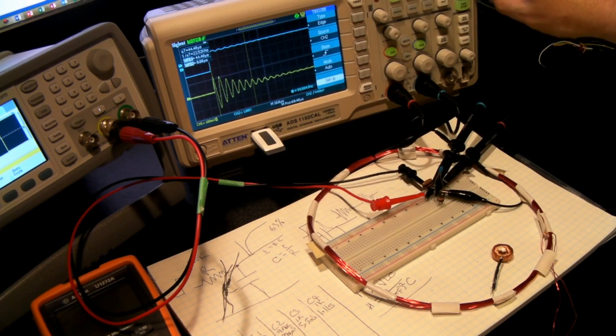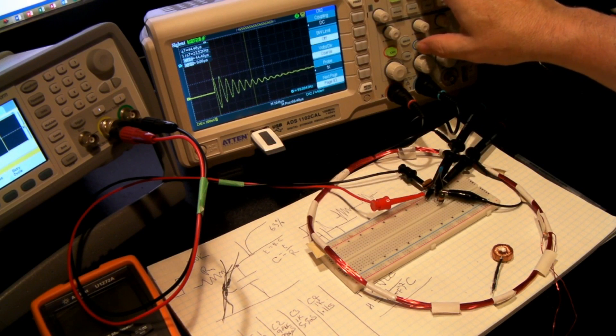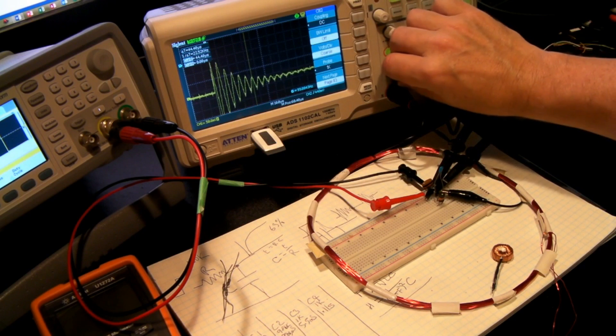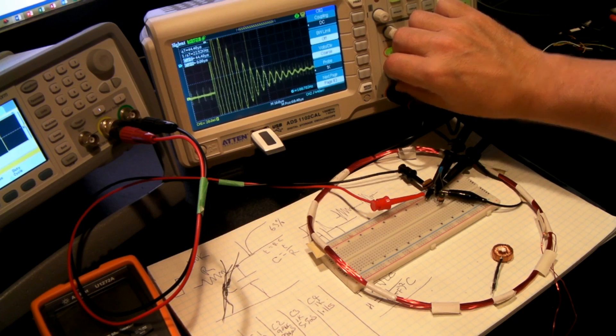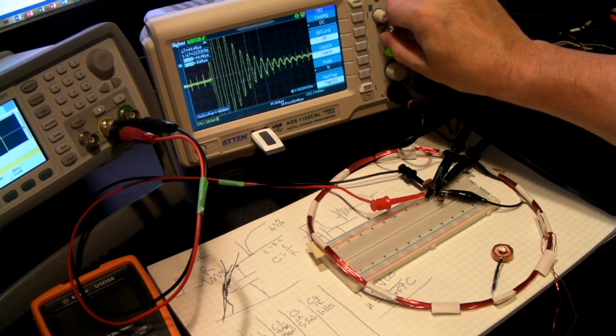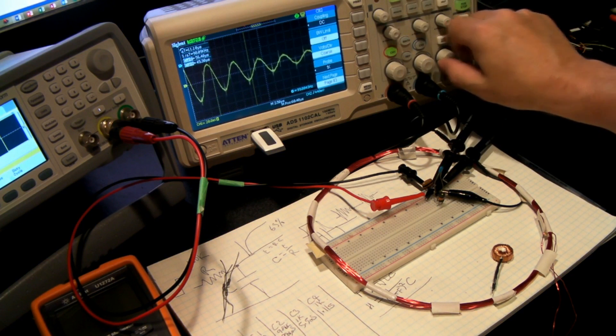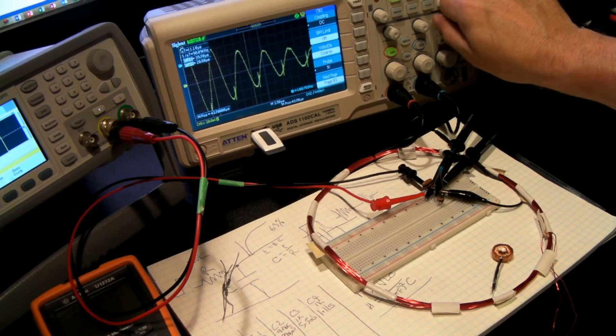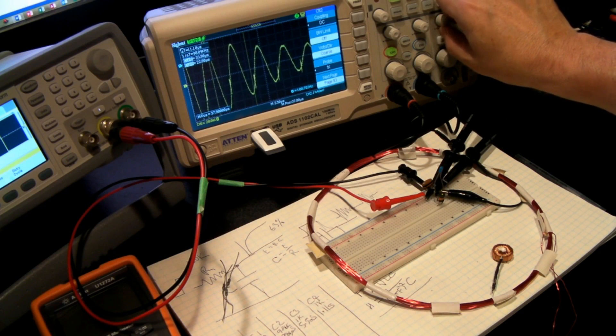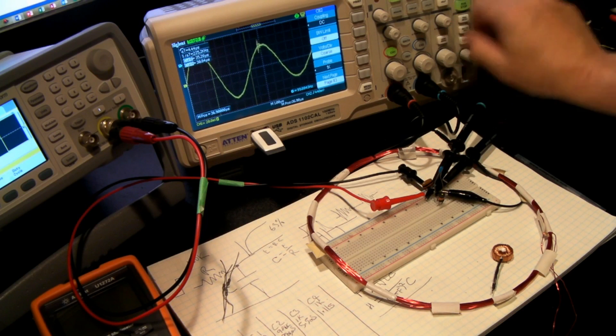So I'm going to turn off channel 2 just to get it out of the way. And I'm going to increase the amplitude of channel 1. We don't have to see the peak of this. We're not really interested in that. Just bring it into the center of the screen, increase the time base so that we have a reasonable amount of the waveform on the screen.